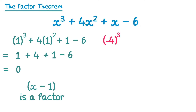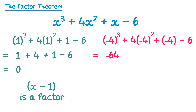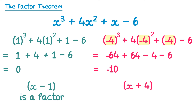Let's try negative 4: negative 4 cubed plus 4 lots of negative 4 squared plus negative 4 take 6. Negative 4 cubed is negative 64, then 4 lots of negative 4 squared — negative 4 squared is positive 16 and 4 lots of 16 is 64, so plus 64. Then take 4 take 6. The 64s cancel, leaving negative 4 take 6 which is negative 10. This doesn't come out as 0, so since we substituted negative 4 the bracket was x plus 4, but this is not a factor.